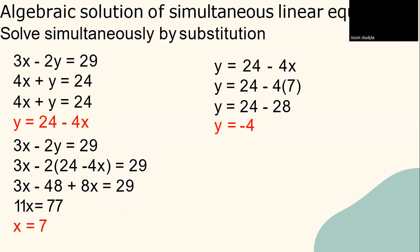When you get the value of y, you substitute the value of y. 3x minus 2y equals to 29. 3x minus 2 in bracket, substitute y to 24 minus 4x, close bracket, equals to 29. 3x minus 2 times 24 becomes 48, and minus multiplied by minus equals to plus, 2 times 4x equals to 8x, equals to 29. 3x plus 8x equals to 11x, minus 48 plus 48. We get 11x equals to 77, and x equals to 7.